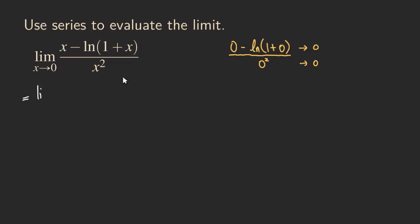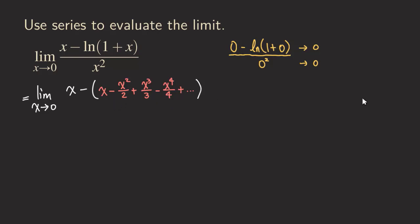First, we write the numerator as x minus ln(1+x). Now we are going to turn ln(1+x) into its Maclaurin series, which is x minus x²/2 plus x³/3 minus x⁴/4 plus dot dot dot, showing that it's an infinite series with infinitely many terms. So we now have the numerator expressed as a Maclaurin series.